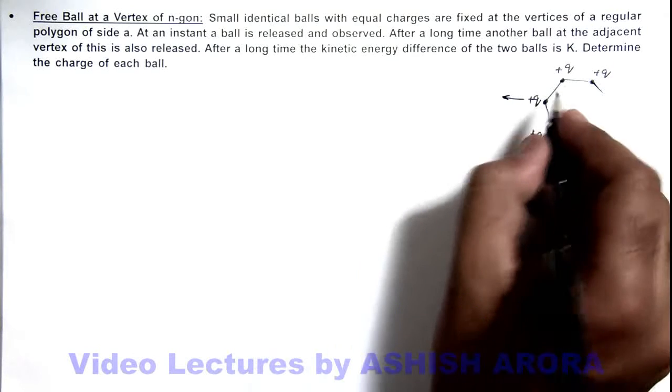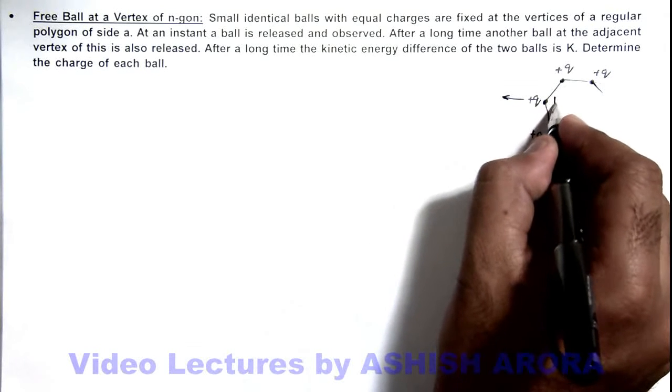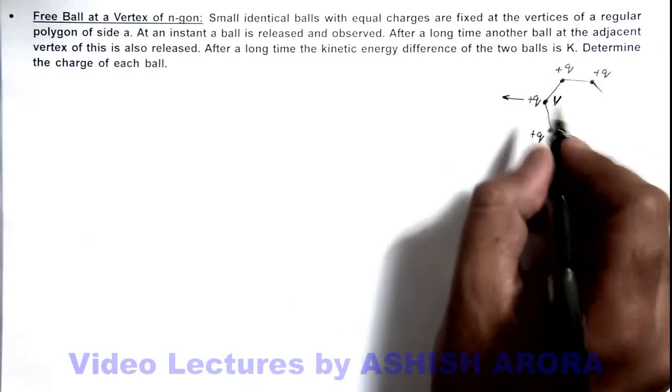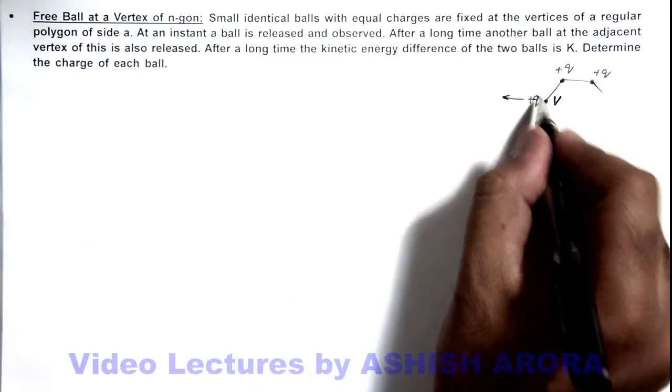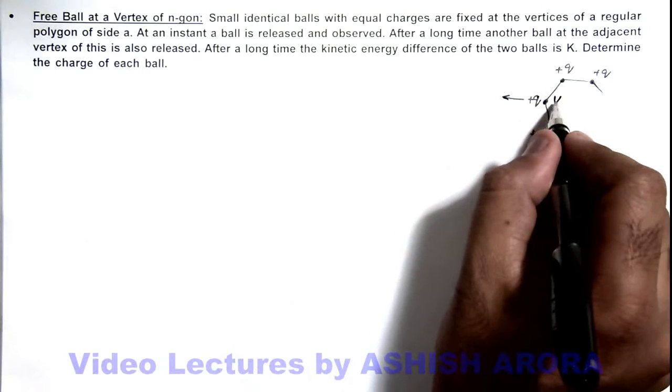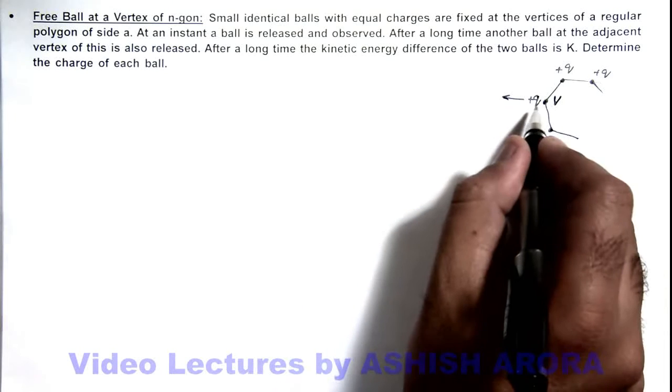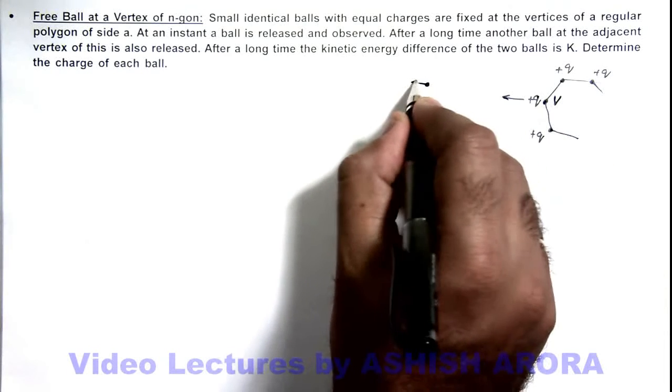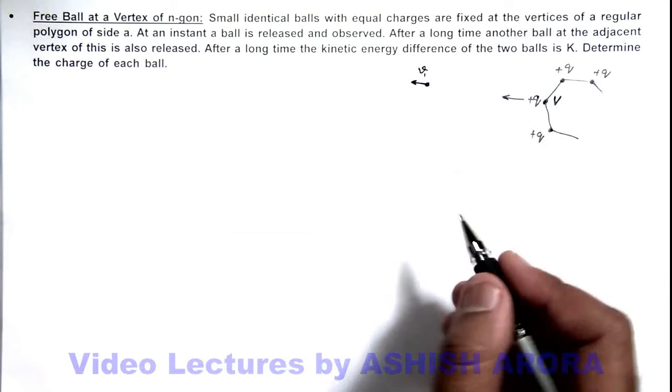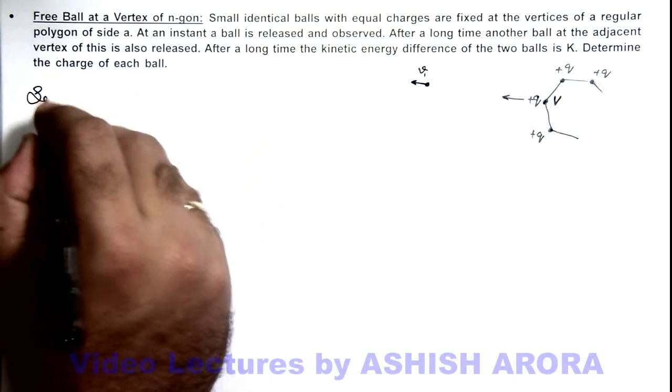Say for example at this point potential is v. Then the potential interaction energy of this charge at this point would be qv which will transform into kinetic energy when it'll be far away from this vertex. So when this ball will reach over here and say its speed is v₁, here in solution we can write at far away point...